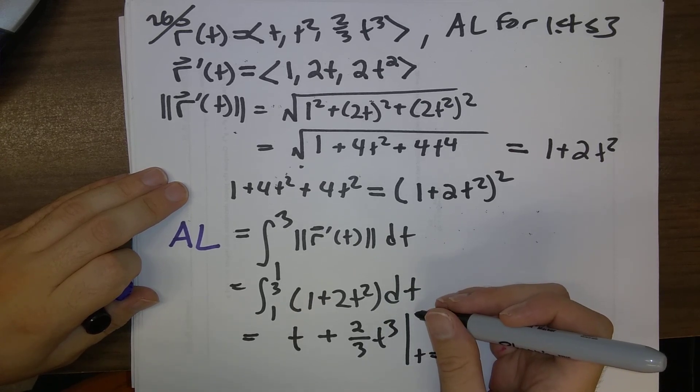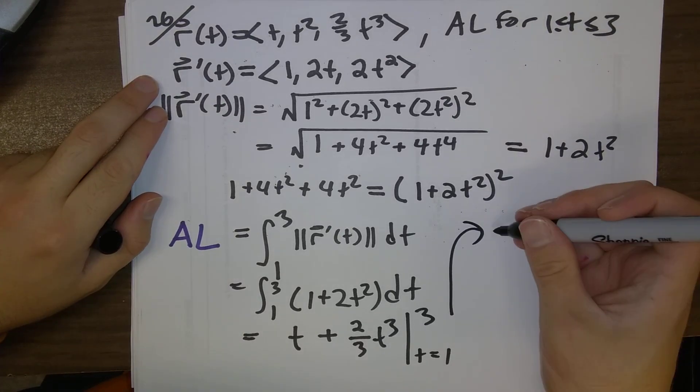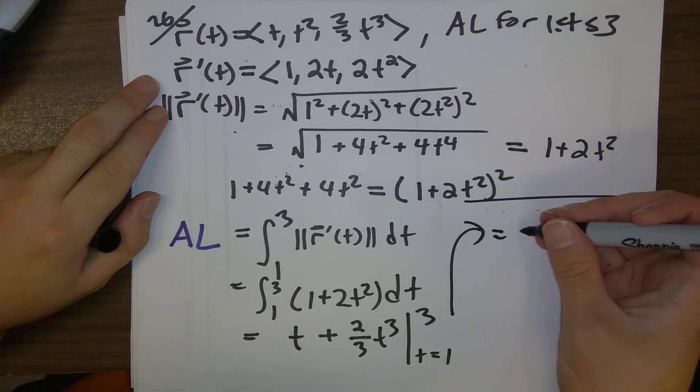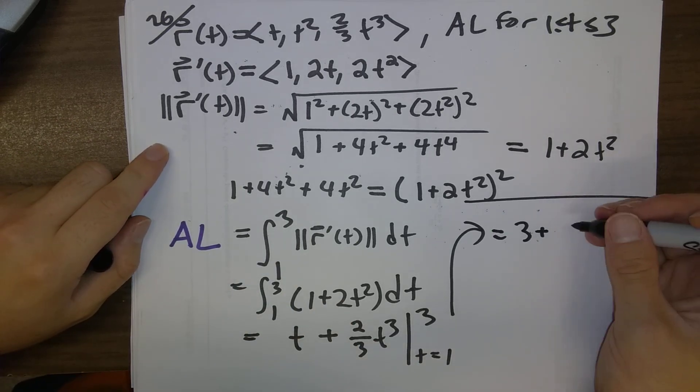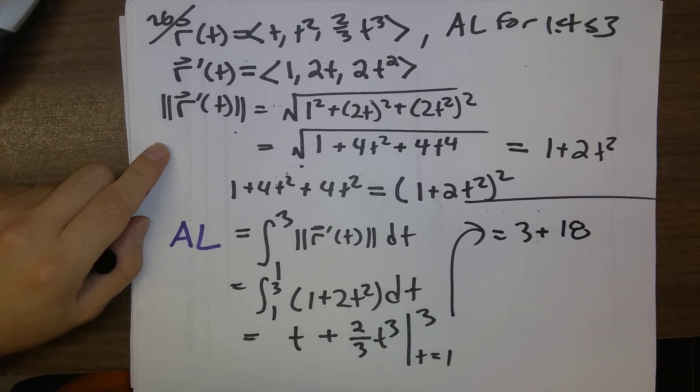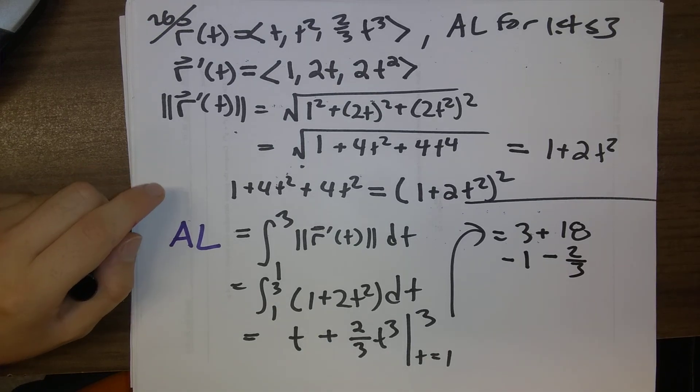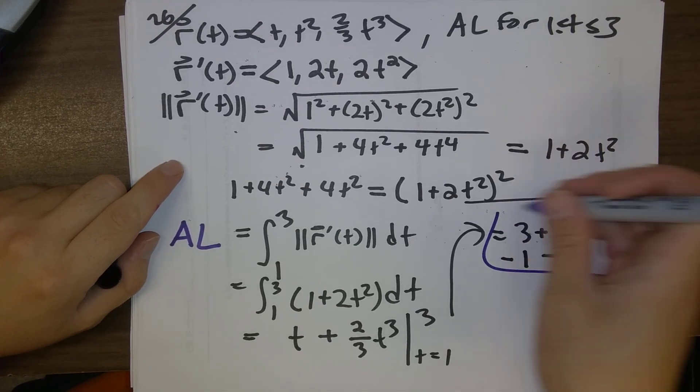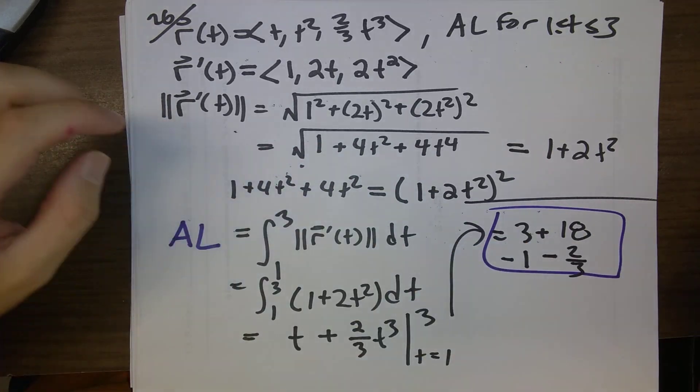And evaluate that t runs from 1 to 3. So, what do we have? We have 3 plus 2 thirds 3 cubed. I think that feels like 18 to me. Minus 1, minus 2 thirds. So, I will just leave the answer like that. That would be a fine answer on an examination.